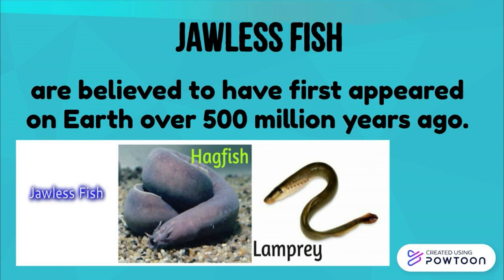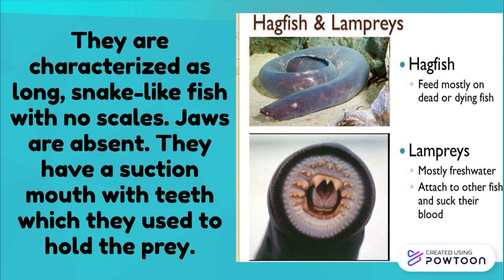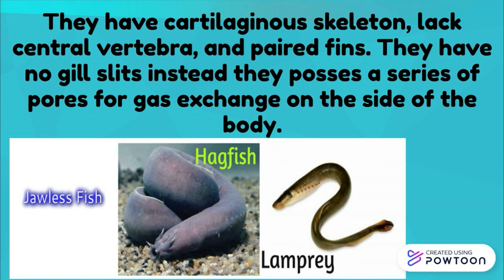Jawless fish are believed to have first appeared on Earth over 500 million years ago. Today, there are only two surviving groups: the hagfish and lamprey. They live in freshwater and saltwater, and are characterized as long, snake-like fish with no scales. Jaws are absent; they have a suction mouth with teeth to hold prey. They have a cartilaginous skeleton, lack a central vertebra and paired fins, and have no gill slits. Instead, they possess a series of pores for gas exchange on the side of the body.